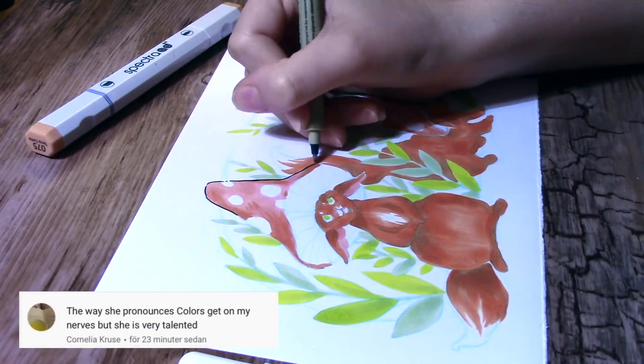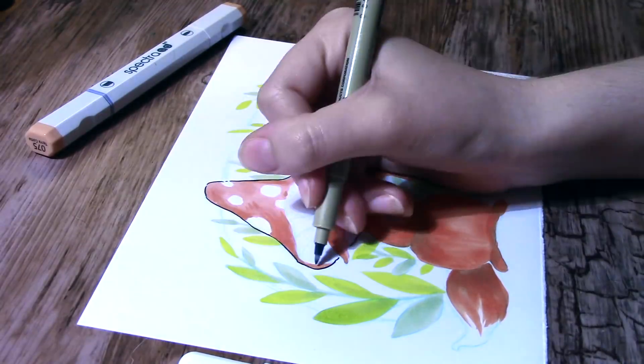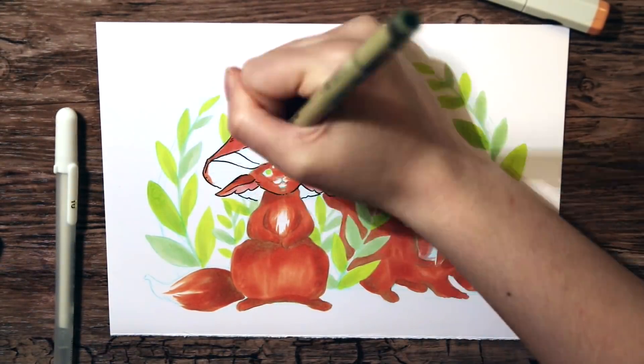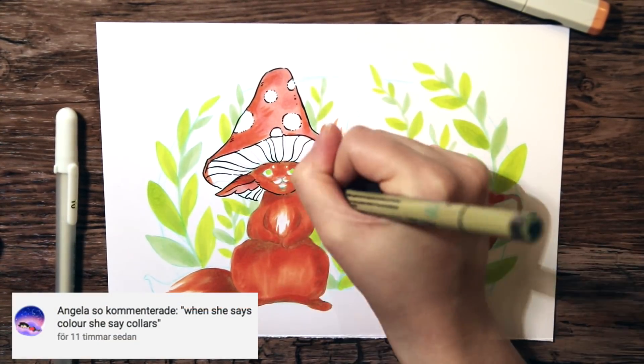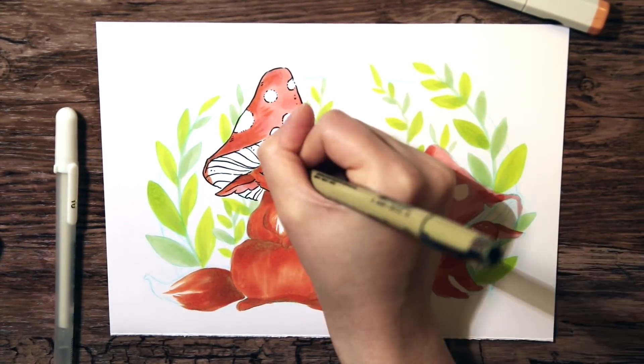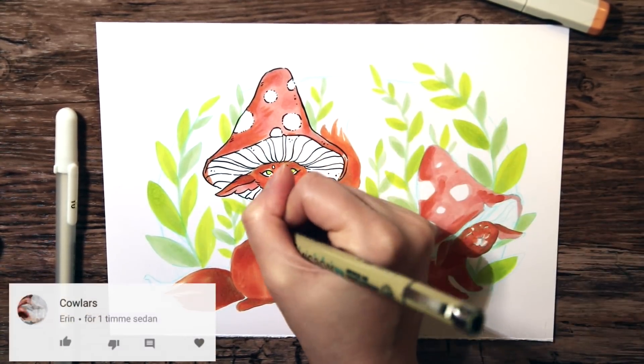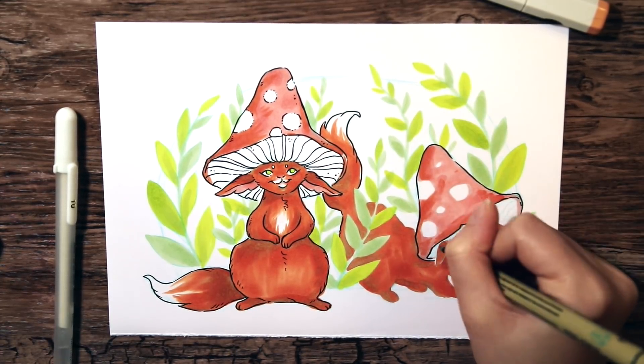The way she pronounces colors gets on my nerves, but she's very talented. Ah, thank you. Everybody knows that adding a compliment at the end of an insults makes everything okay. When she says colors, she says colors. Make up your mind, am I saying colors or colors? See, zero lores. Cowlers. At this point I just think you're having a stroke.